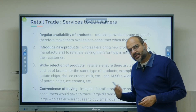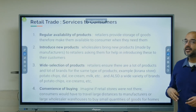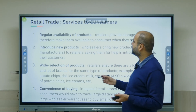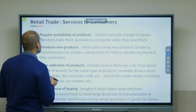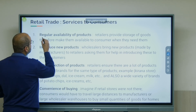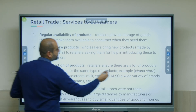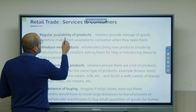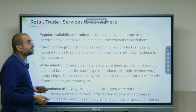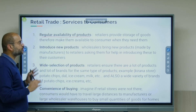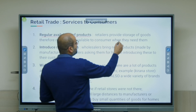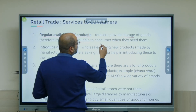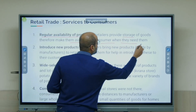Now, what kind of services do retailers provide to consumers? First is regular availability of products — every time, products are available. If a consumer wants chips, they should be able to get chips. The retailer stocks goods regularly, stores them, and makes them available to consumers when they need them.